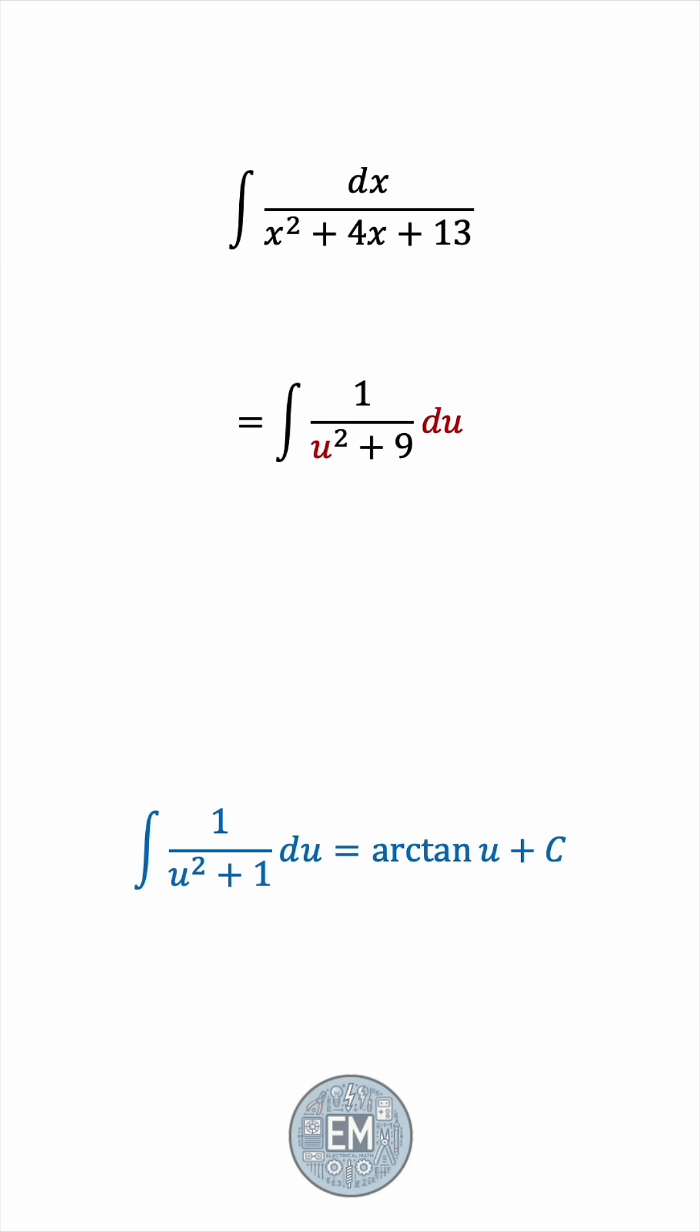But the constant in the denominator is 9, not 1. So let's factor out a 9 from the denominator, take the 1 over 9 outside the integral.